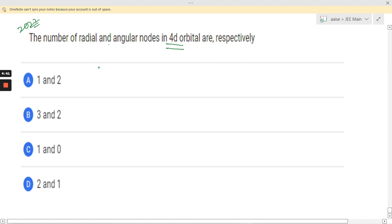So first of all, let us write down the formula for radial nodes. Radial nodes equals n minus l minus 1, where n is the principal quantum number and l is the azimuthal quantum number. Now for angular nodes, angular nodes equals l, that is the azimuthal quantum number.